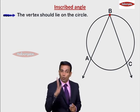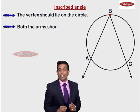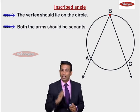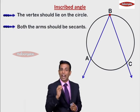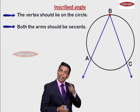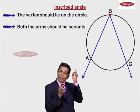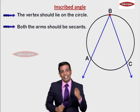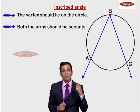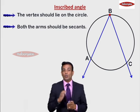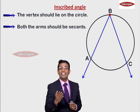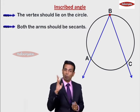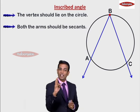Condition number two says that both the arms should be secants. For this angle, what are the two arms? They are Ray BA and Ray BC. Look at arm BA — is it intersecting the circle at two points? Yes, at point A and at point B. Same way, Ray BC — is it intersecting the circle at two points? Yes, at points B and C. So in short, both the arms are secants. The two conditions are: vertex on the circle, and both the arms are secants.